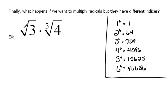But what happens if that's not the case? In this case, this index is an understood 2, and this one is a 3. If they are not the same, then we cannot just multiply the radicals, it's not possible. We have to go about it a slightly different way.